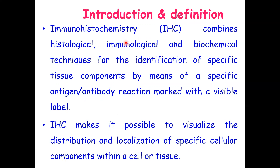What is the meaning of immunohistochemistry? Immunohistochemistry is a technique that combines histological, immunological, and biochemical techniques for identification of specific tissue components — whether in the cell membrane, nucleus, cytoplasm, or even extracellular components. By means of a specific antigen-antibody reaction.